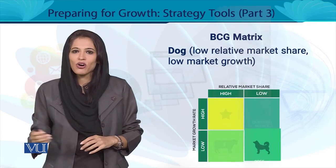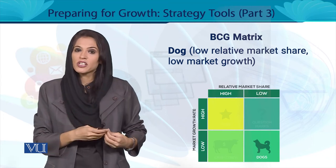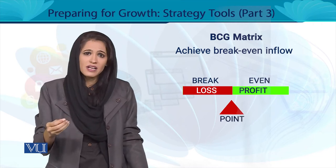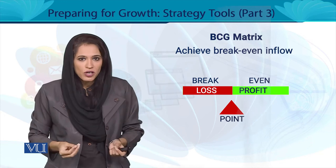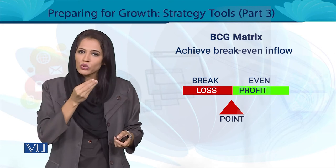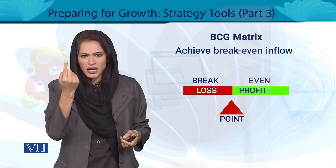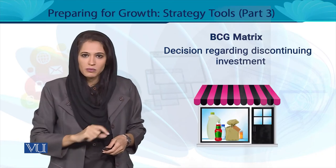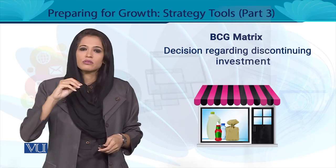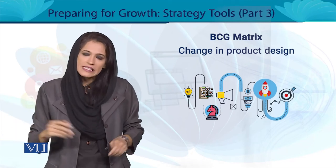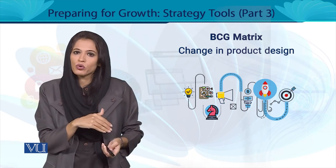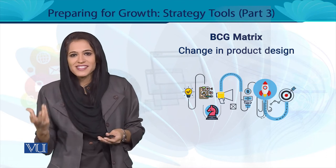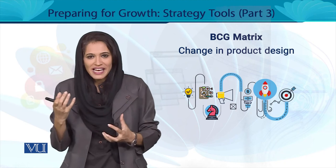आखर में आती है Dog category, जिसमें आपका market growth भी नहीं है और आपका relative market share भी सबसे कम है। आपकी product break even भी achieve नहीं कर रही। क्या ऐसी product के साथ आप business expansion चाहेंगे? No. अगर आपका one-product business है तो Dog category में business closure decision लिया जाता है। या तो product redesign करें, या market change करें, या business quit करें — इससे पहले कि आप और नुकसान उठाएं।